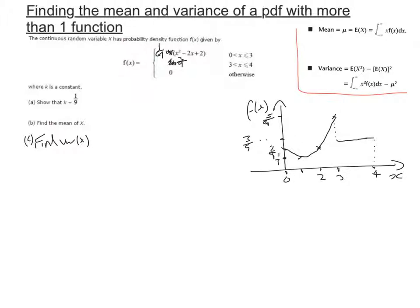So that's what our PDF looks like. It's a quadratic curve between 0 and 3, and then it's a straight line between 3 and 4. It's definitely not symmetrical.